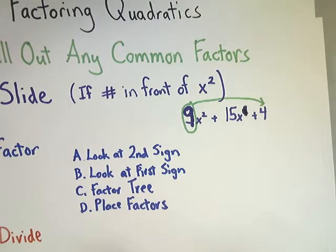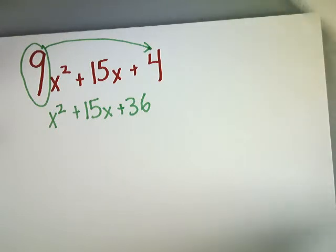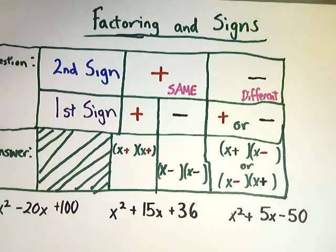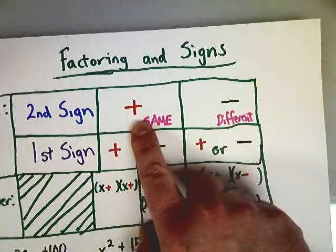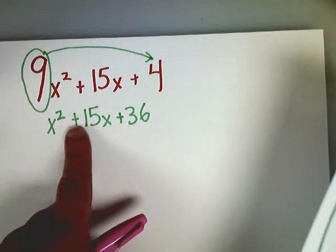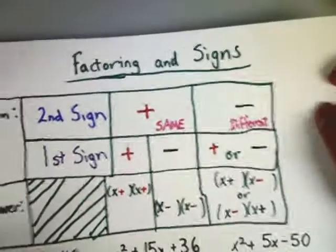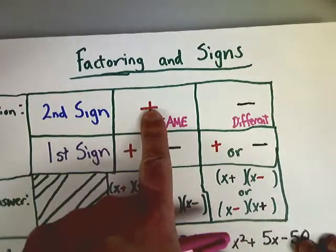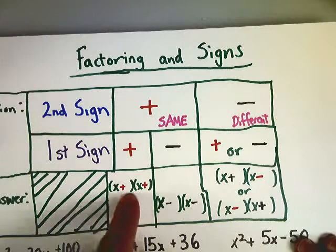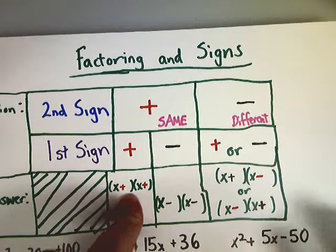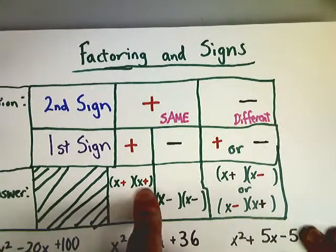The second step that I'm going to look at for factoring is looking at that first sign. The first sign is going to tell me what the actual signs are. Are they both plus, minus, minus? So we saw in ours that that second sign was a plus. So I'm going to look at it and look at the first sign. The first sign in my little situation here is plus. So the second sign is plus, the first sign is plus. So that means my factored answer is going to be x plus, whatever the number is, and then x plus, whatever else it is.